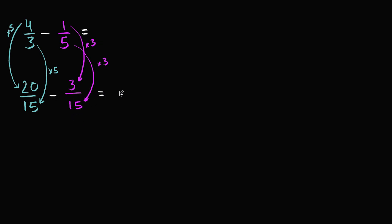This becomes a lot more straightforward. It's going to be a certain number of 15ths. We have 20/15 and we're taking away 3 of those 15ths. If you have 20 of something and take away 3 of them, you're going to have 17 of those things — in this case, 17/15. If we wanted to write it as a mixed number, 15 goes into 17 one time with a remainder of 2, so it's 1 and 2/15.